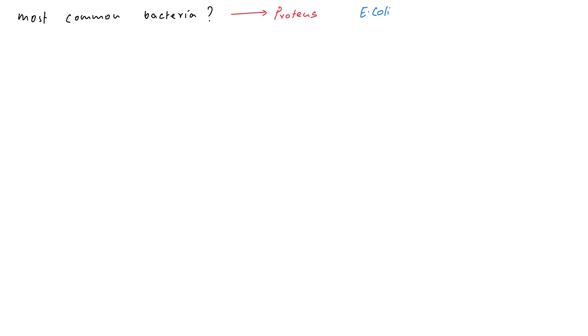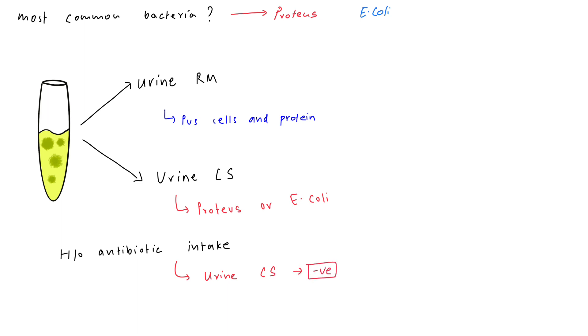For these patients with suspected XGP, we are going to do two kinds of urine tests: urine routine and microscopy, and urine culture and sensitivity, which usually show growth of Proteus or E. coli species. However, it is not necessary that culture and sensitivity has to come positive.